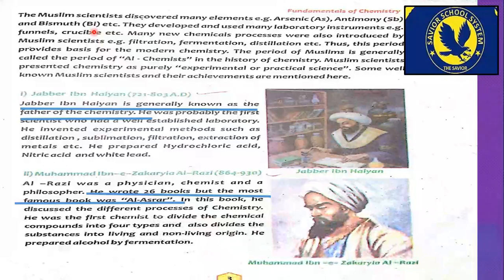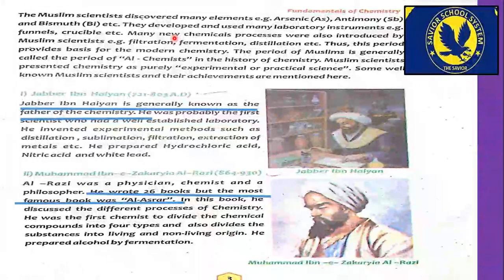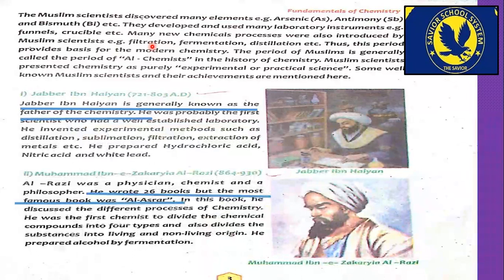They developed and used many laboratory instruments — for example, funnels, crucibles, etc. Muslim scientists also discovered many chemical processes, such as filtration, fermentation, and distillation. Thus this period provides the basis for modern chemistry. The period of Muslims is generally called the period of alchemists in the history of chemistry.